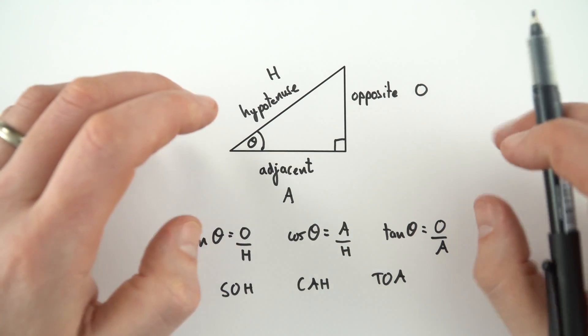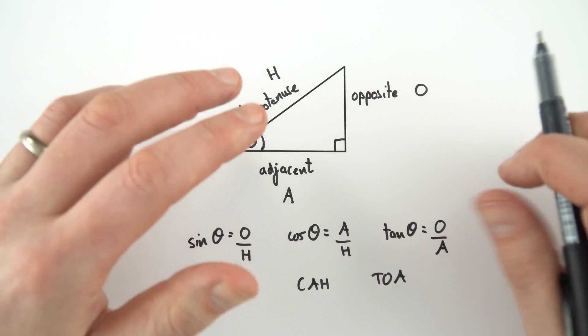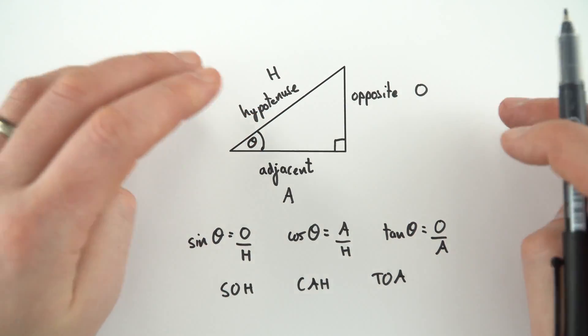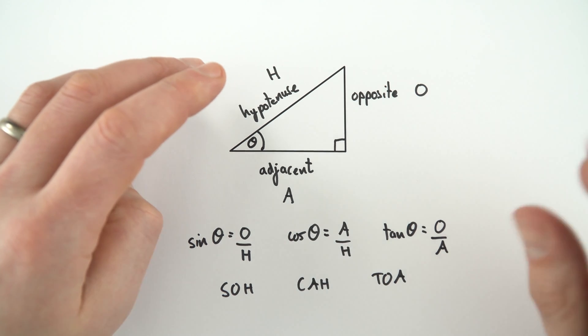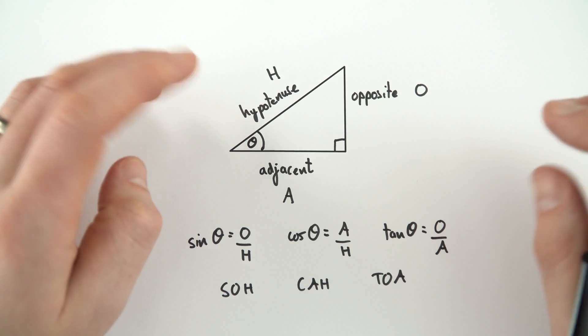So trigonometry, which involves sine, cos and tan, is a really important skill that you will master as you're doing your GCSEs. And occasionally it might be useful as well for GCSE physics.